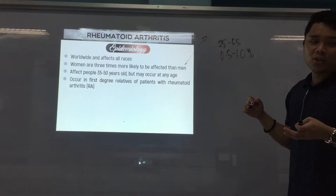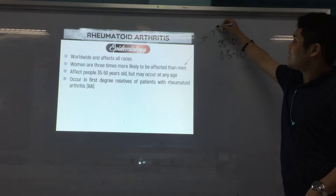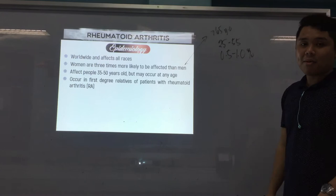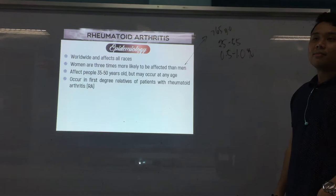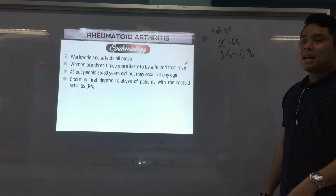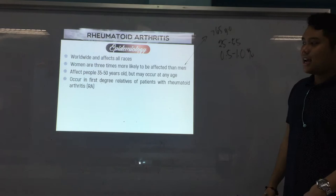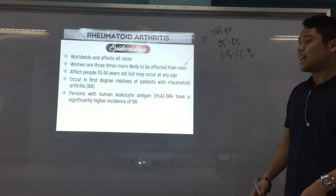For women, it is highly prevalent — high chance for women greater than 65 years old to develop this disease. So it's generally women who are targeted. If you have a family member with rheumatoid arthritis, or your family is known to develop this disease, then it's most likely that you will develop it as well. Persons with HLA-DR4 have a significantly higher incidence of RA.